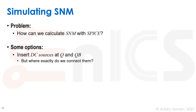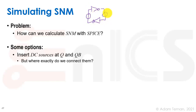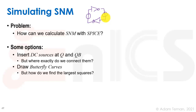We can insert DC sources at Q and Q-bar, but where exactly do we connect them? We have our cross-coupled inverters and we don't stick a source at a certain node — we have to stick it in between two nodes. Exactly what do we measure? How do we know that the bit has flipped when we get to the right VN? That's a big question and I'm not sure there's a correct answer for it.